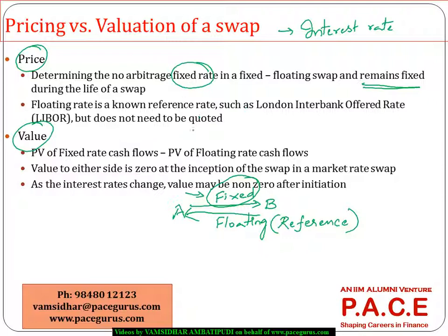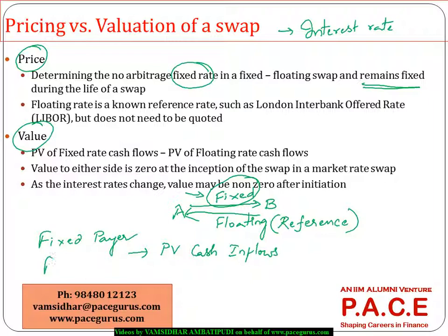When it comes to the value of the swap, generally we look at it from the perspective of a fixed payer. When we talk about a fixed payer, he will be receiving floating — so it is floating cash inflows present value minus fixed cash outflows present value. If we are looking at it from the perspective of a floating payer, he will receive fixed cash flows and pay floating cash flows. The difference between the two at any point in time is what we call as the value of the swap.